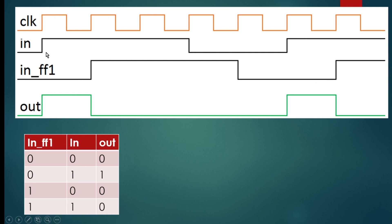Now we need to create a truth table where 'in_ff1' and the input signal will drive our expected output. When 'in' and 'in_ff1' are both zero, output is zero. When 'in_ff1' is zero and 'in' is one, output is one. When 'in_ff1' is one and 'in' is one, output is zero.